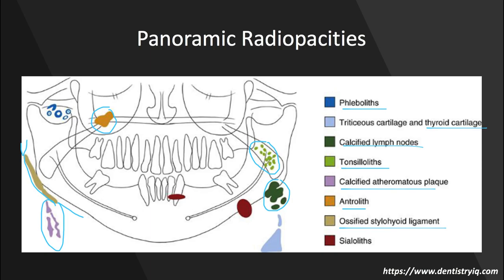And lastly, we can have sialoliths. These are often in the submandibular gland, which will be down here, or in Wharton's duct up by the mandibular incisors. It'll be a bit more flat if it's in a duct and more round if it's located in a gland. So just by looking at the location and shape, you can get a pretty good idea of what you're looking at.